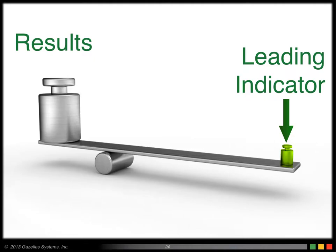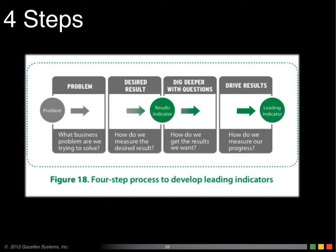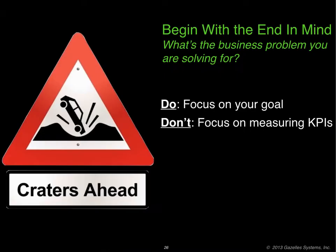In chapter eight of the Rhythm Book, we have a four-step process to help you develop leading indicators. I'm going to go through that right now.